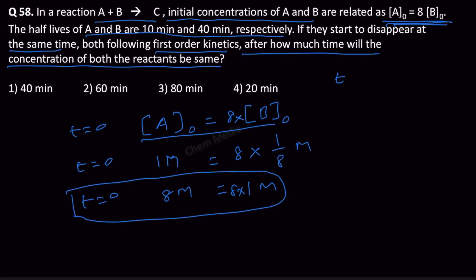When t equals t half, what will happen to A? A will become 4 molar when 1 cycle is completed. When 2 cycles are completed, it becomes 2 molar.